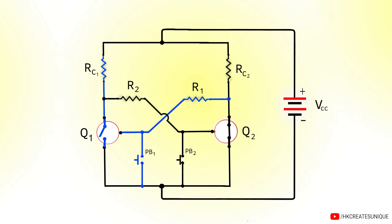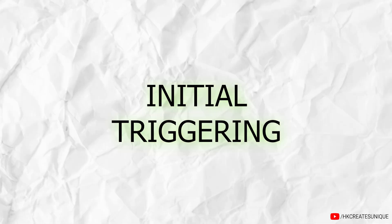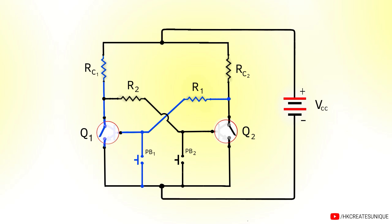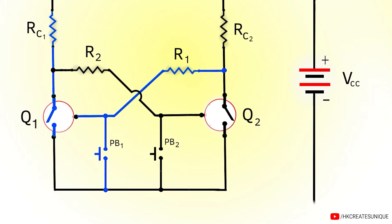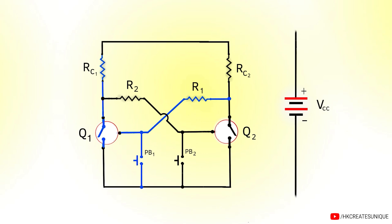Similarly, you can trigger the circuit back to the first stable state by pressing the second button — this turns Q2 off and turns Q1 on. If the power source is disconnected and reconnected, there is no guarantee which transistor turns on first, even if one has a higher probability. Replacing transistors makes it impossible to know whether Q1 or Q2 will be on initially.